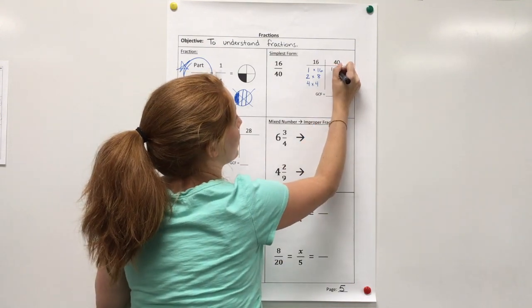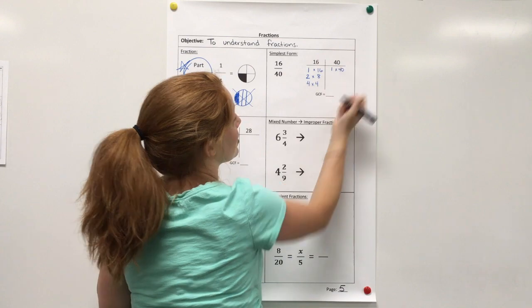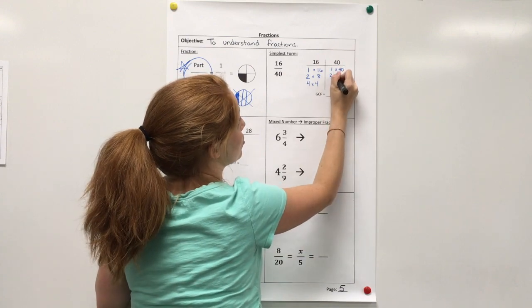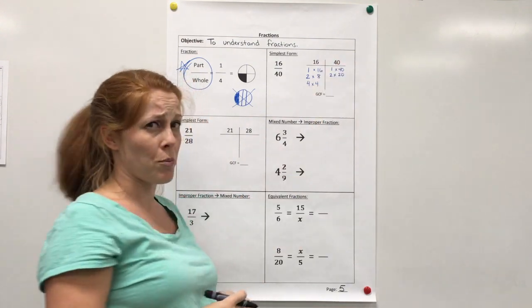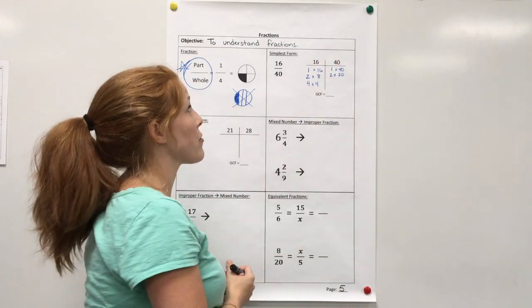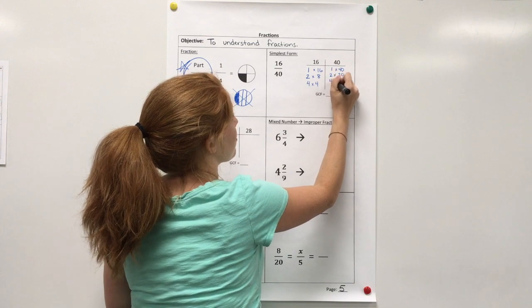Next I'm going to do 40. So 1 times 40. It's even, so 2. And that's times 20. 3 is not going to work because 4 plus 0 is 4. That's not divisible by 3. 4 will work. 4 times 10.